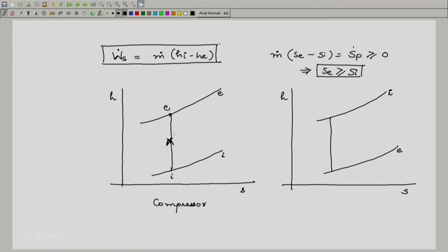If the process is not ideal, we know that s_e will be greater than s_i, which means as I traverse towards the exit I should be going towards the right, moving towards increasing entropy. Hence I would draw a process like this. This would be the real exit state. Let me call the ideal exit state e-star, and the real exit state would be somewhere here.